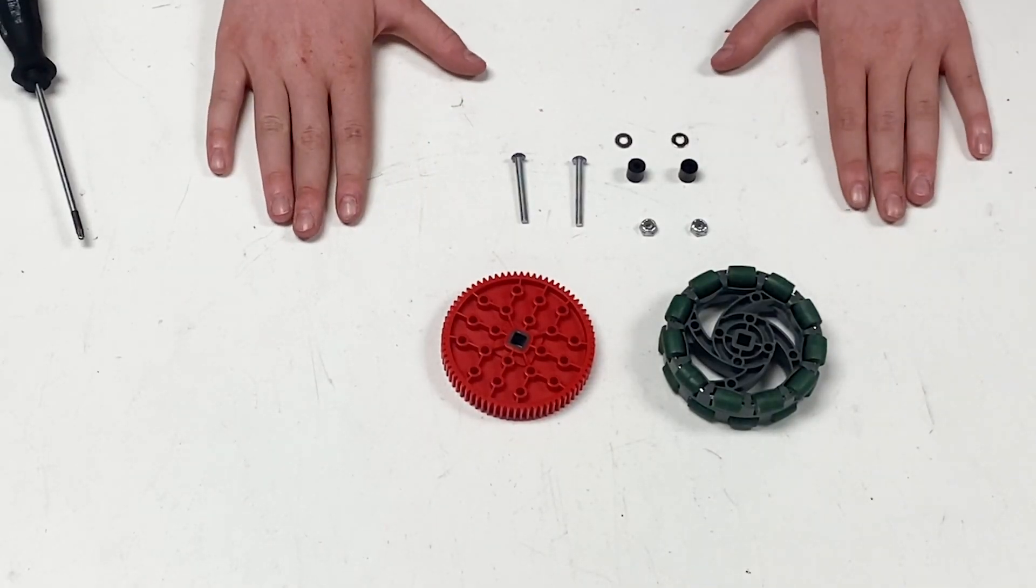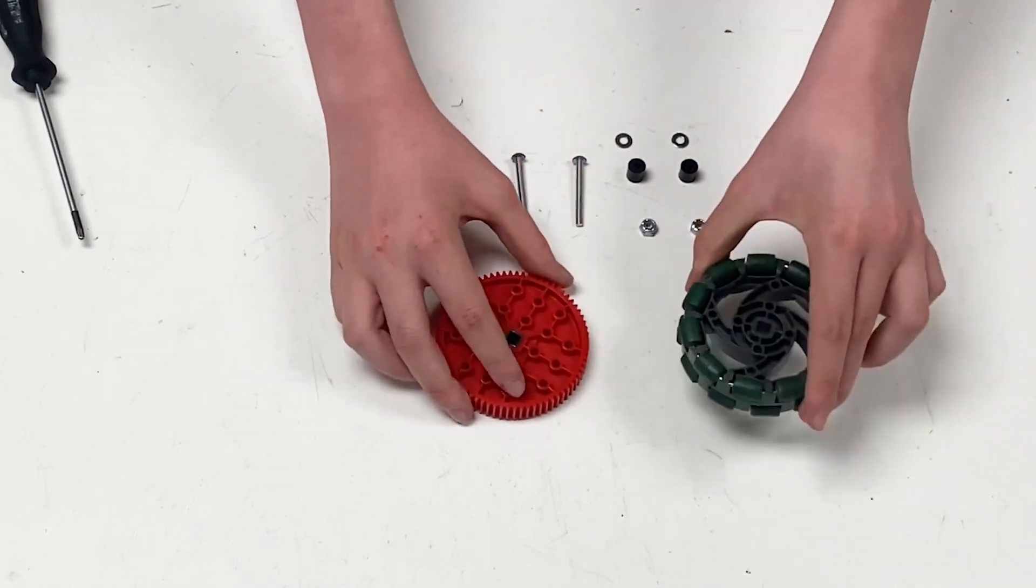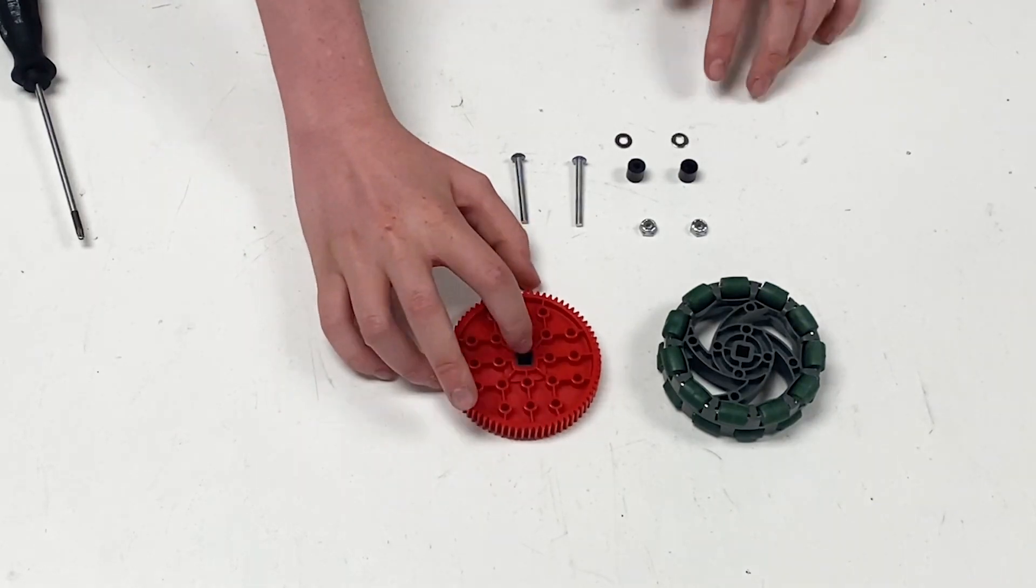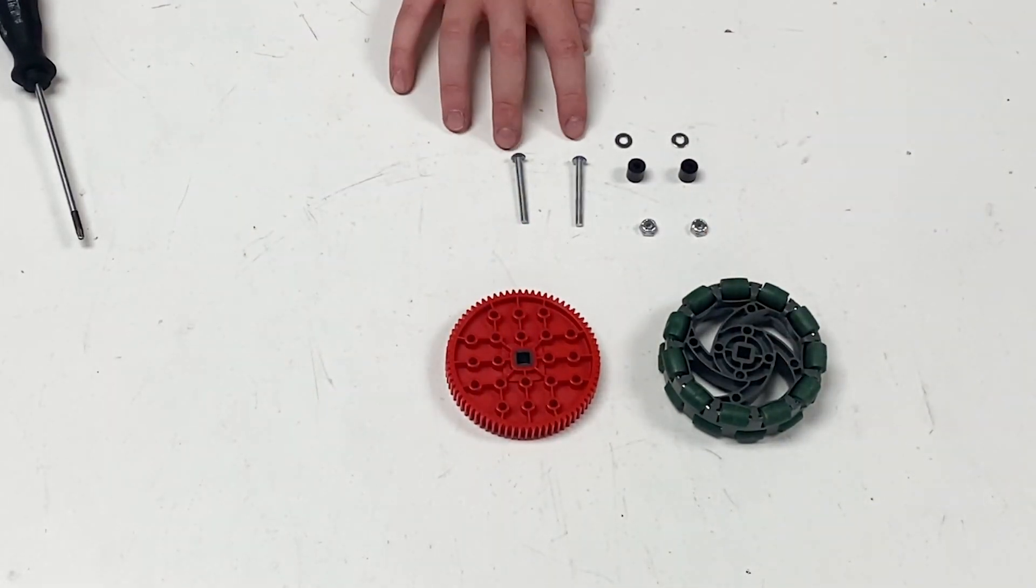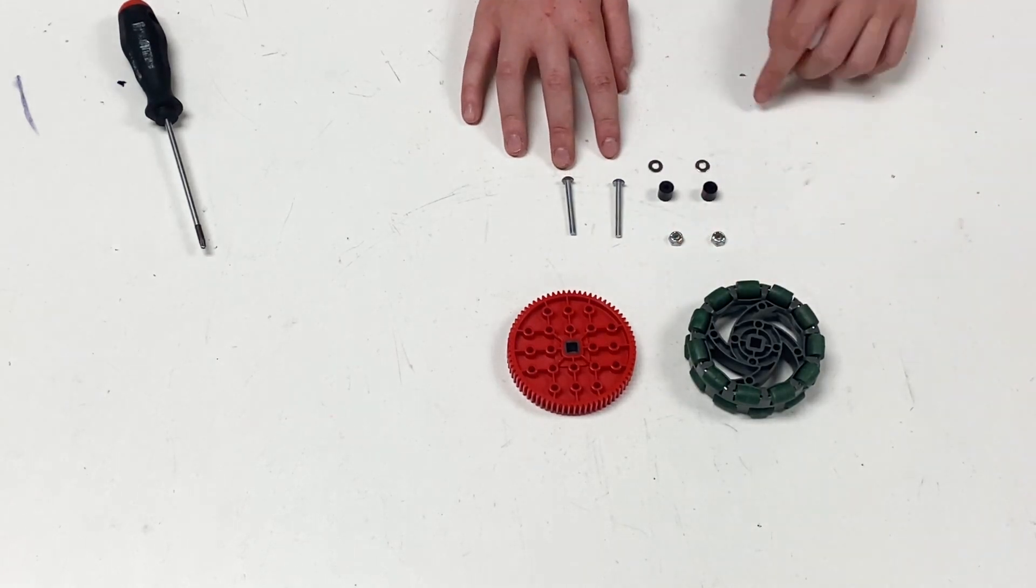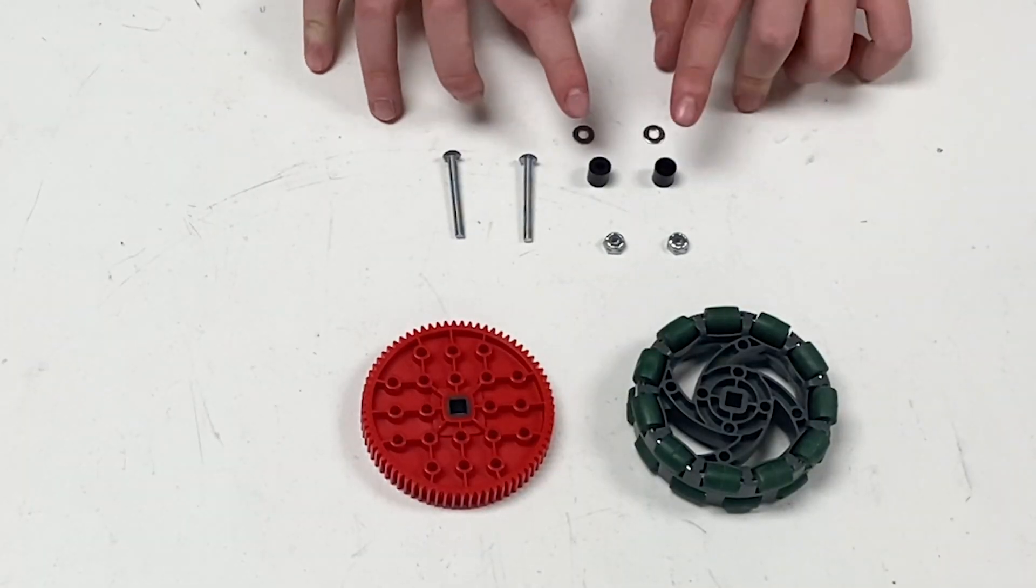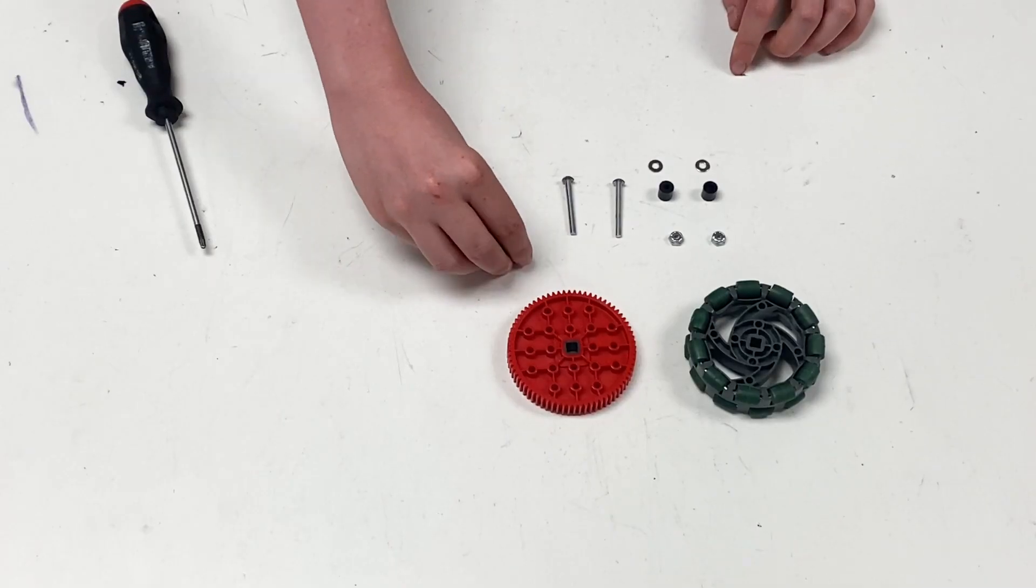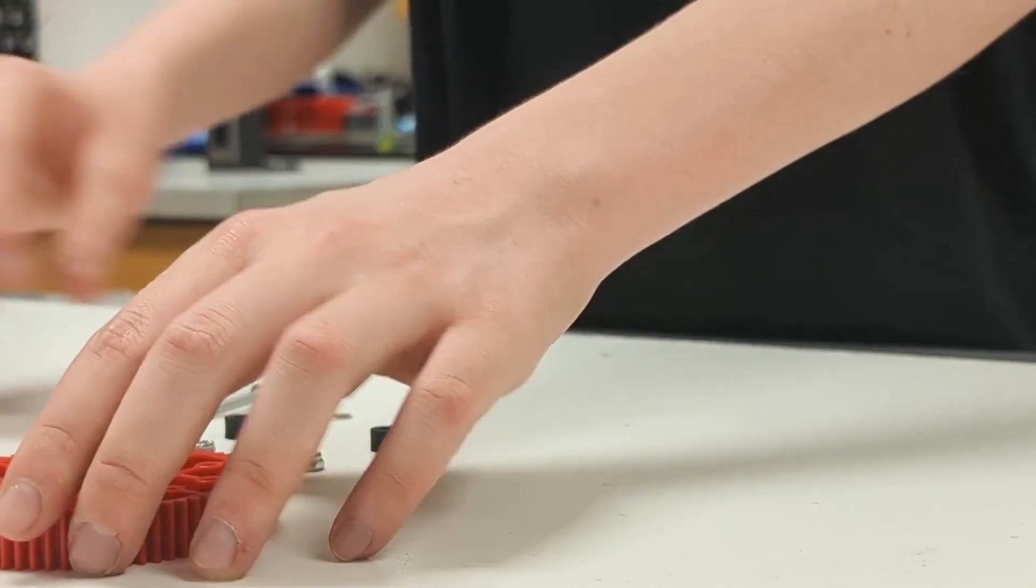The pieces that we have for the wheel and gear assembly are one omni wheel, one 72 tooth gear with no insert on either, two 1.5 inch screws, two small lock nuts, two washers, two 3.75 inch spacers, and for later we have two circle inserts.